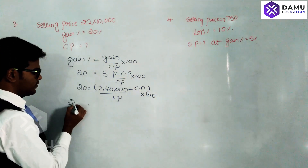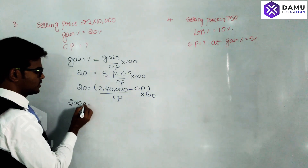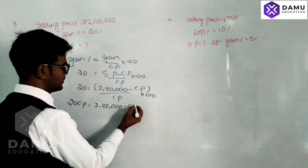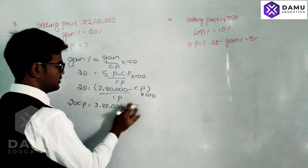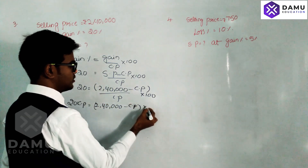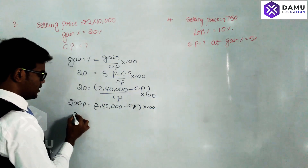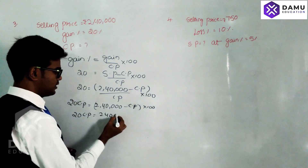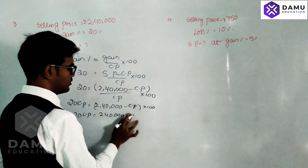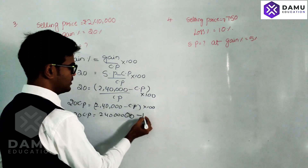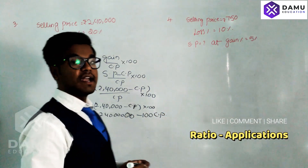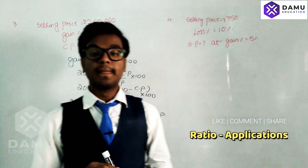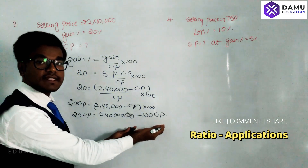Now shift the cost price to the other side: 20 into cost price equals two lakh forty thousand minus cost price, multiplied by 100. Expanding: 20 CP equals two lakh forty thousand into 100, minus 100 CP.